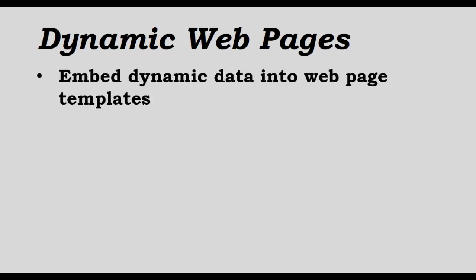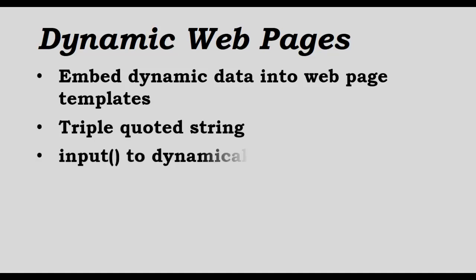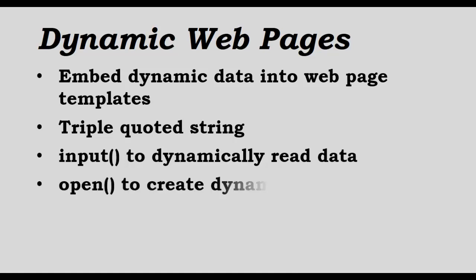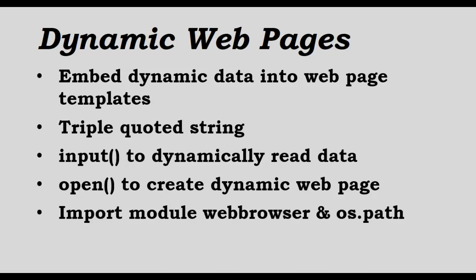To embed dynamic data into web page templates, we will use a triple-quoted string to create the template, then use the input function to dynamically read data from the user, and the open function to create a file generated dynamically based on user input. We will also use the webbrowser module and os.path module so that once the page is dynamically created, it will be displayed in the web browser.